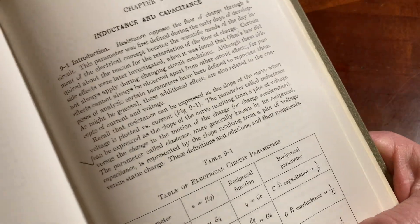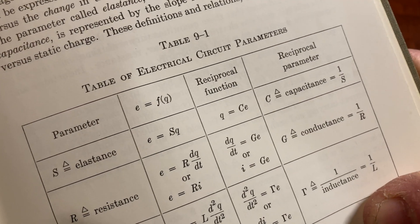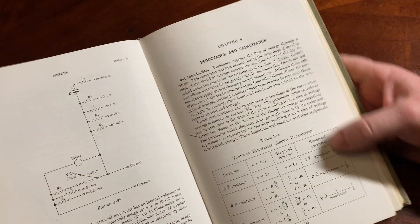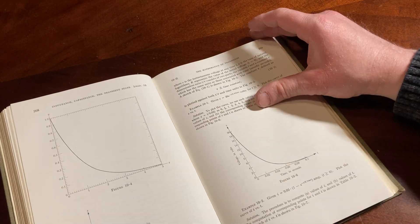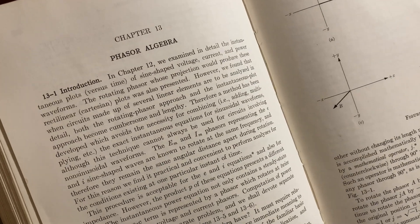Inductance and capacitance. There's some formulas here. Table of electrical circuit parameters. Interesting. Yeah, electrical engineering is a fairly popular major. It's not super popular. I don't think it, I guess it depends on the school, perhaps.